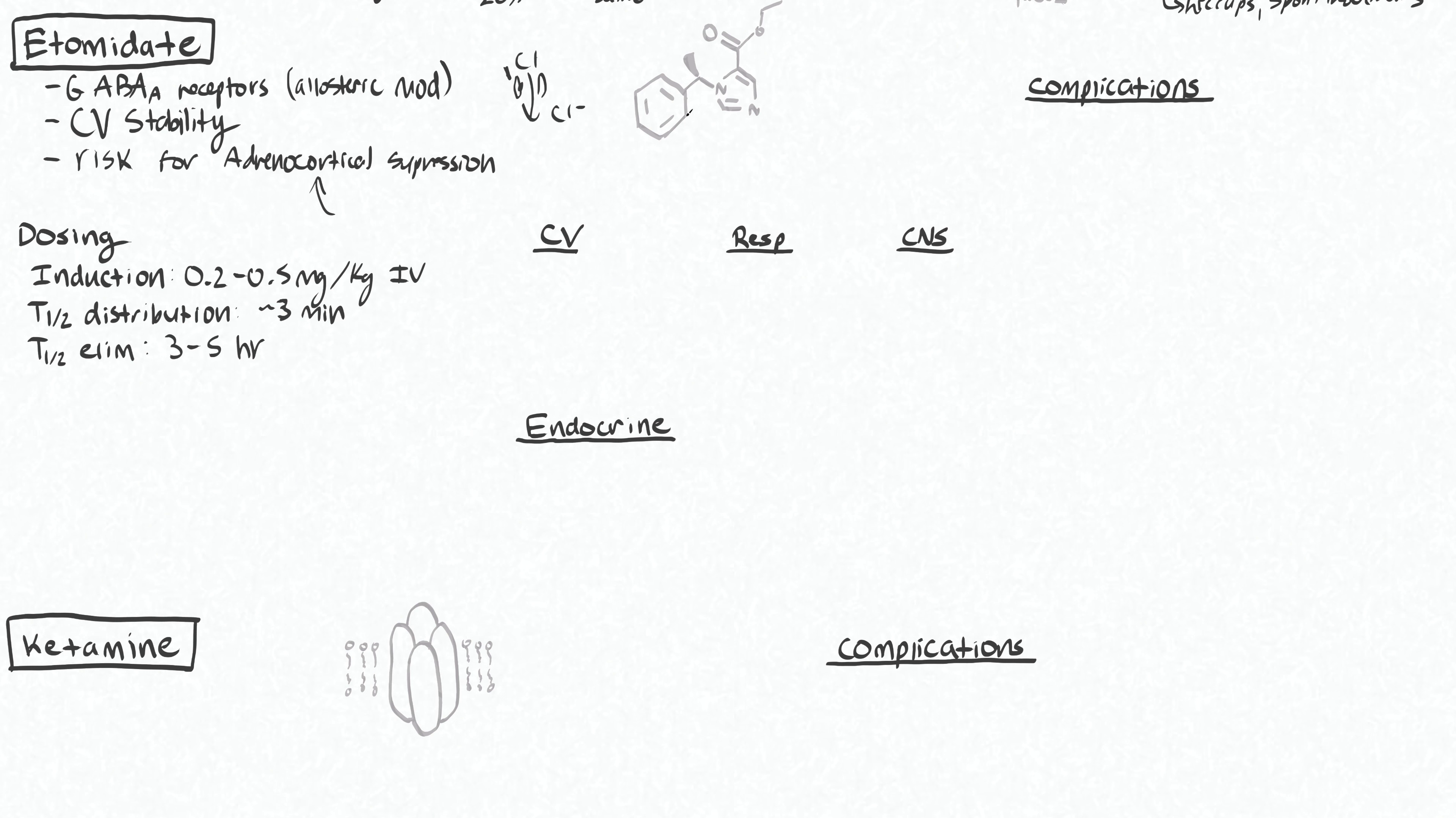This is what the etomidate molecule looks like. Notably, it is an ester, so it does undergo some ester hydrolysis. And it has this imidazole ring, which makes it lipophilic at physiologic pH. So unlike propofol, it does not need to be dissolved in a lipid emulsion. And then it also undergoes hepatic metabolism to an inactive form.